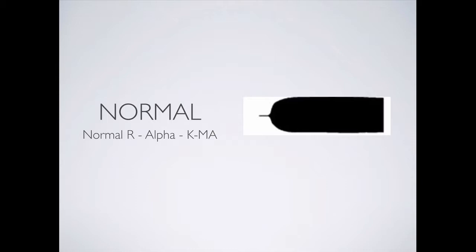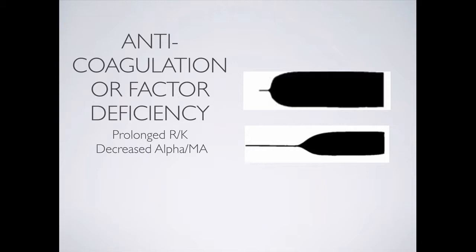A normal TEG is a normal R time, a normal alpha angle, a normal K, and a normal maximal amplitude. When you have anticoagulation on board or a global factor deficiency, the first thing I tend to see is a prolonged R, then a prolonged K, and a decreased alpha angle at a slight slant. The maximal amplitude tends to be a little bit less, but it's a very nuanced difference. I tend to rely on the curve itself more than the numbers, and it's a prolonged R and decreased K with a more sloped-out angle that triggers me to give FFPs.